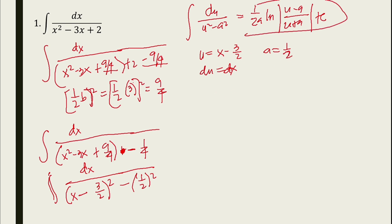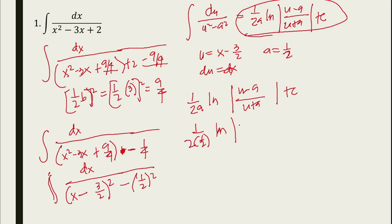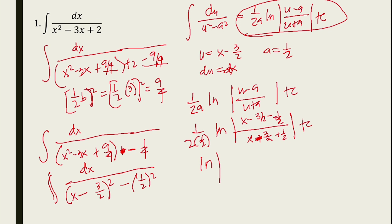Applying the formula: 1 over 2 times (1/2) times ln of (u minus a)/(u plus a) plus C. That gives ln of (x minus 3/2 minus 1/2) over (x minus 3/2 plus 1/2) plus C. Simplifying: 3/2 minus 1/2 gives x minus 2, and 3/2 plus 1/2 gives x minus 1, so the result is ln of (x minus 2)/(x minus 1) plus C.